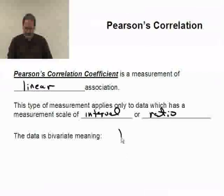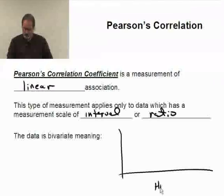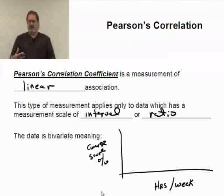So, as a quick example, perhaps you take a look at the number of hours per week studied and let's say course score. Course score used for your grade, and let's say that's in a percent. So, we have at least interval for both of these variables.